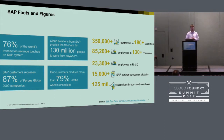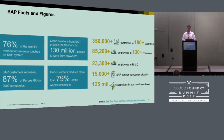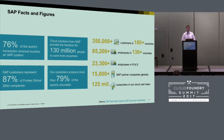76% of the world's transactional revenue touches an SAP system. There are millions of people using our cloud solutions, and many Forbes 2000 companies are SAP customers. One fun fact: 79% of the world's chocolate production is produced by SAP customers using SAP systems. You can run similar analogies with beer, cars, and many traditional goods.